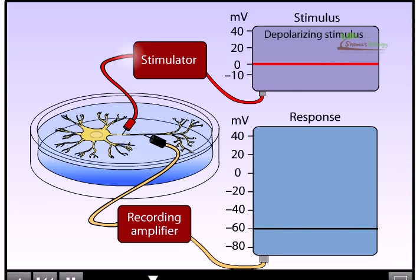The same relationship is true for small injections of depolarizing current. The voltage response of the cell is directly proportional to the magnitude of the injected current. If the stimulus is sufficient to push the membrane potential past the firing threshold for the neuron, such as the second stimulus in this example, then an action potential is generated.